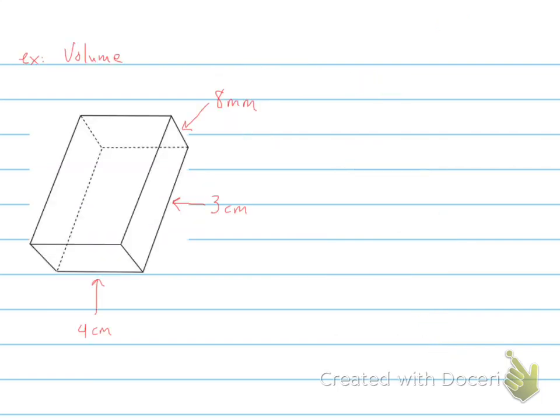All right, the final example is on volume, and this one we've got a width of 8 millimeters, a height of 3 centimeters, and a length of 4 centimeters. So if we write these up here, we have our length is equal to 4 centimeters, our width is equal to 8 millimeters, and our height is 3 centimeters.